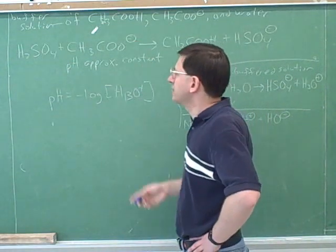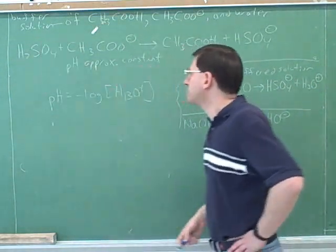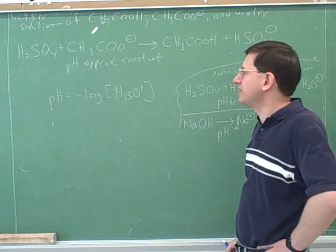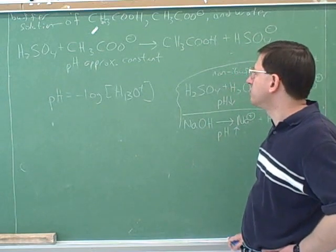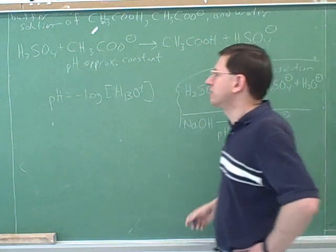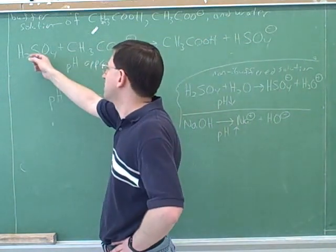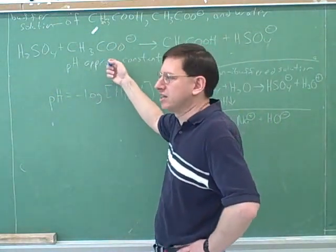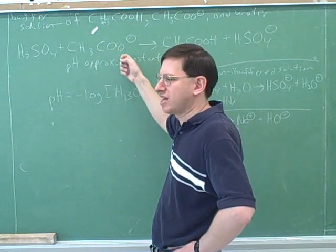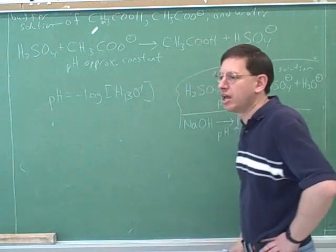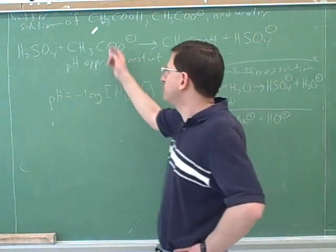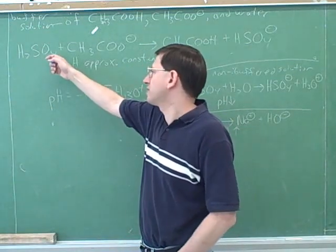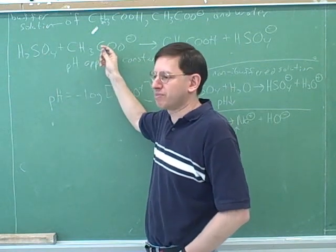However, when we add sulfuric acid to this buffer, based on this equation, it looks like we're not producing any hydroniums. Now, that's a little misleading — if we looked in more detail, we'd see there will be some hydronium, but not very much. We certainly can't say each sulfuric acid produces a hydronium like it would in pure water. The pH here is going to be approximately constant — it will decrease, but not by much. The buffer sponges up the acid; the sulfuric acid is getting sponged up by the acetate.